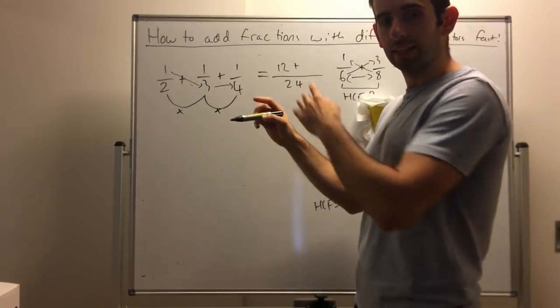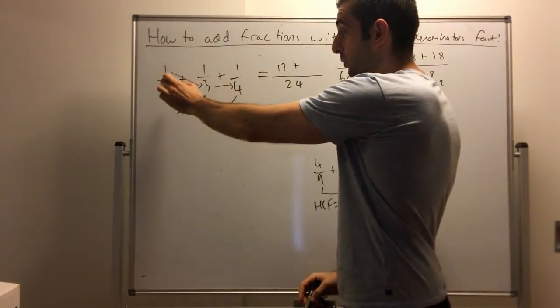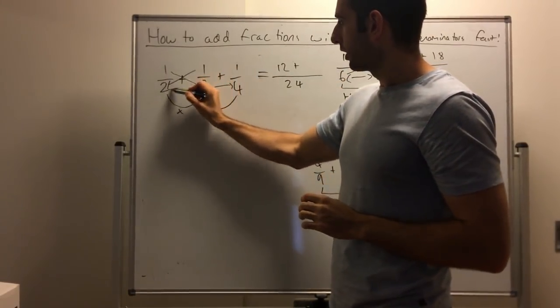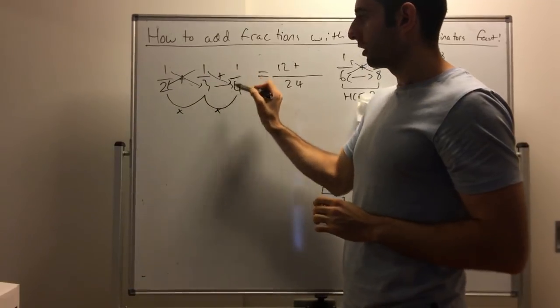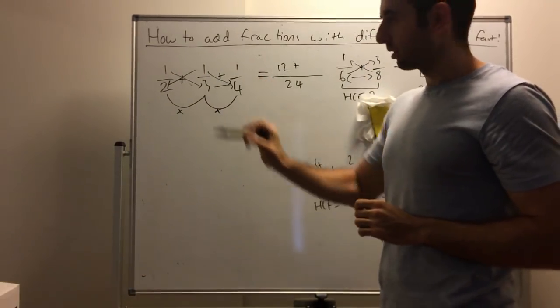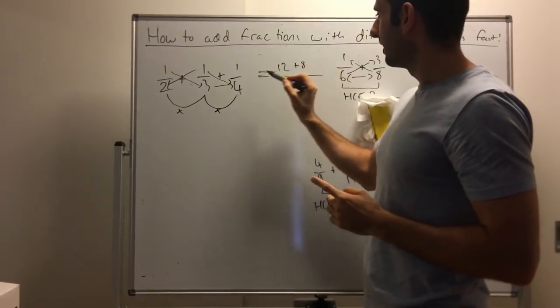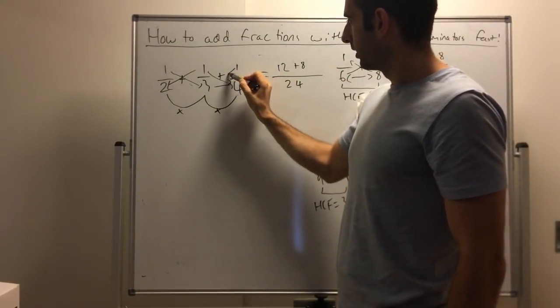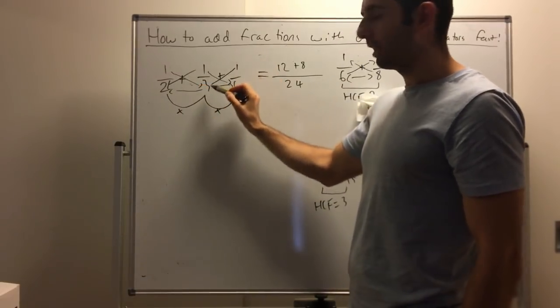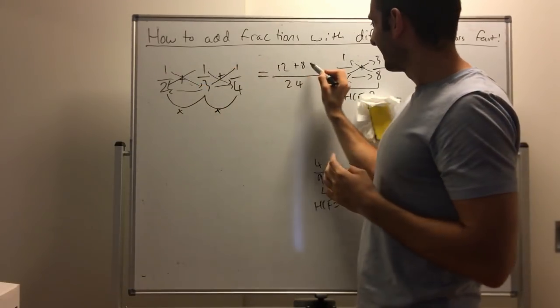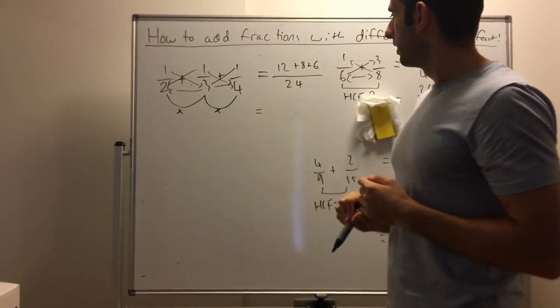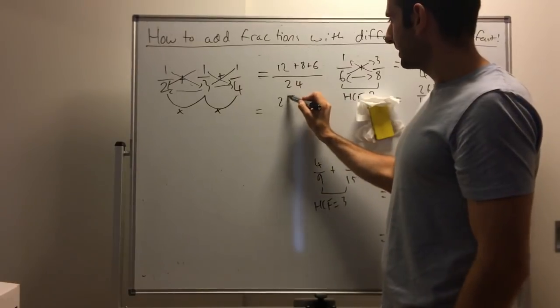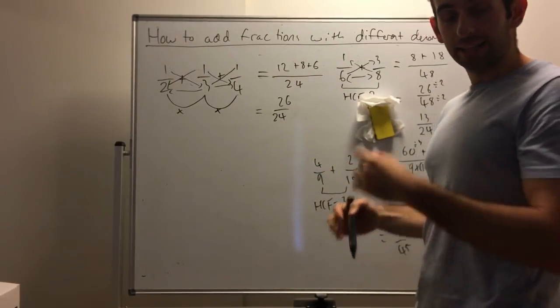What do we do in the middle? Same thing. Whatever numerator you have, you times it with every other denominator that's not there. So it'll be 1 times 2, times 4. 1 times 2 is 2, times 4 is 8. Same thing with the third denominator: times that and then times that. 1 times 3 is 3, times 2 is 6. If we add it all together, we'll get 26 on 24.